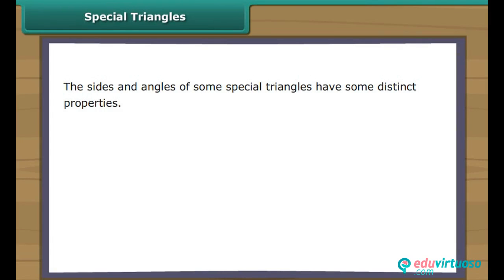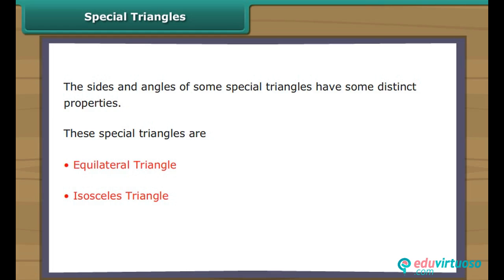Special Triangles. The sides and angles of some special triangles have some distinct properties. These special triangles are: Equilateral Triangle, Isosceles Triangle, and Right-Angled Triangle. Let us learn about them.